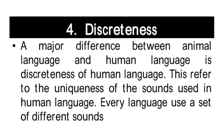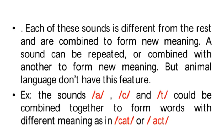The fourth property is discreteness. A major difference between animal language and human language is the discreteness of human language. This refers to the uniqueness of the sounds used in human language. Every language uses a set of different sounds; each sound is different from the rest and can be combined to form new meaning. For example, the sounds C, A, and T could be combined together to form words with different meanings, as in 'cat' and 'act'.